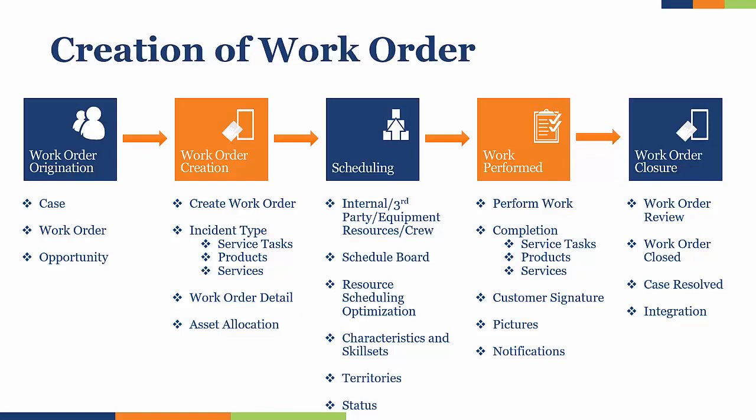After that, the work order gets created, and it's comprised of a couple different components — some of those are service tasks, products, and services. A service task represents the things I need to do when I go out on site to complete the job: I may have to test something, install something, do a report at the end, get a signature — whatever those kinds of things are. That's what you classify as a service task.